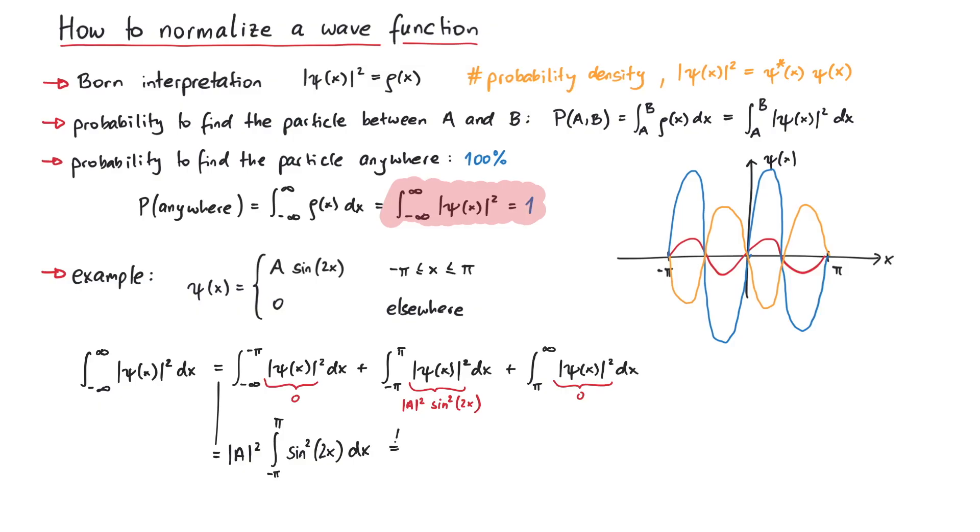Whatever this is, it must be equal to 1. The result of this integral is pi, so we can deduce that the absolute square of A must be equal to 1 over pi. This means that the absolute value of A must be equal to 1 over the square root of pi.